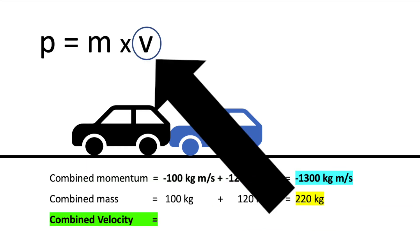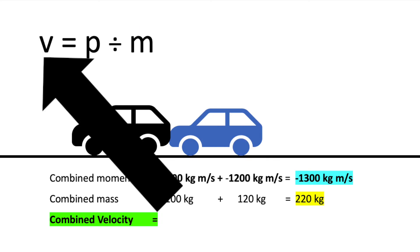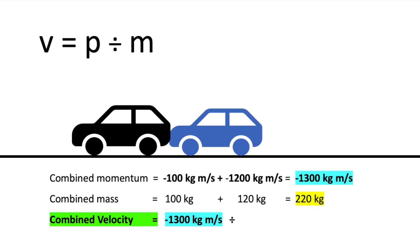To work out the combined velocity, you recall the equation p equals m times v and rearrange for v. Velocity equals momentum divided by mass. So the combined velocity equals minus 1300kgm per second divided by 220kg, which gives a combined velocity just after the collision of minus 5.9m per second.